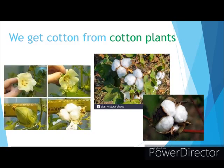And from where do we get cotton? We get cotton from cotton plants. You can see the picture of a cotton plant — the flowers, seeds, and when we open the seed we can see white color balls of cotton. So in summer we wear cotton clothes, and we get cotton from cotton plants.